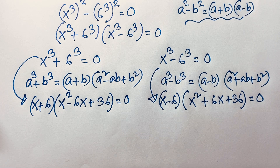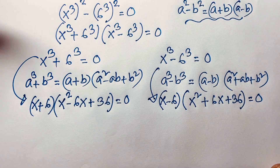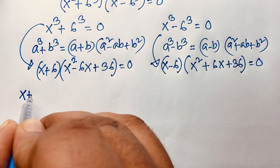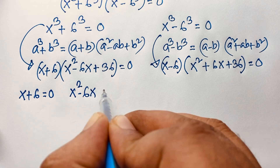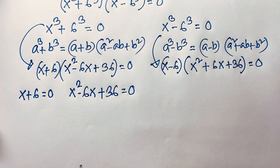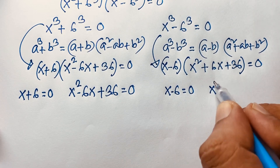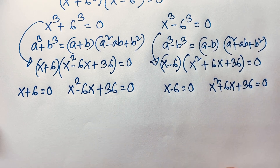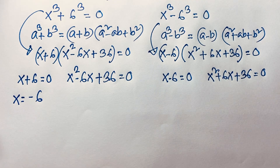Now we have four sub-cases. From Case 1: x + 6 = 0, giving x₁ = -6, and x^2 - 6x + 36 = 0. From Case 2: x - 6 = 0, and x^2 + 6x + 36 = 0. From x + 6 = 0, we immediately get x₁ = -6.